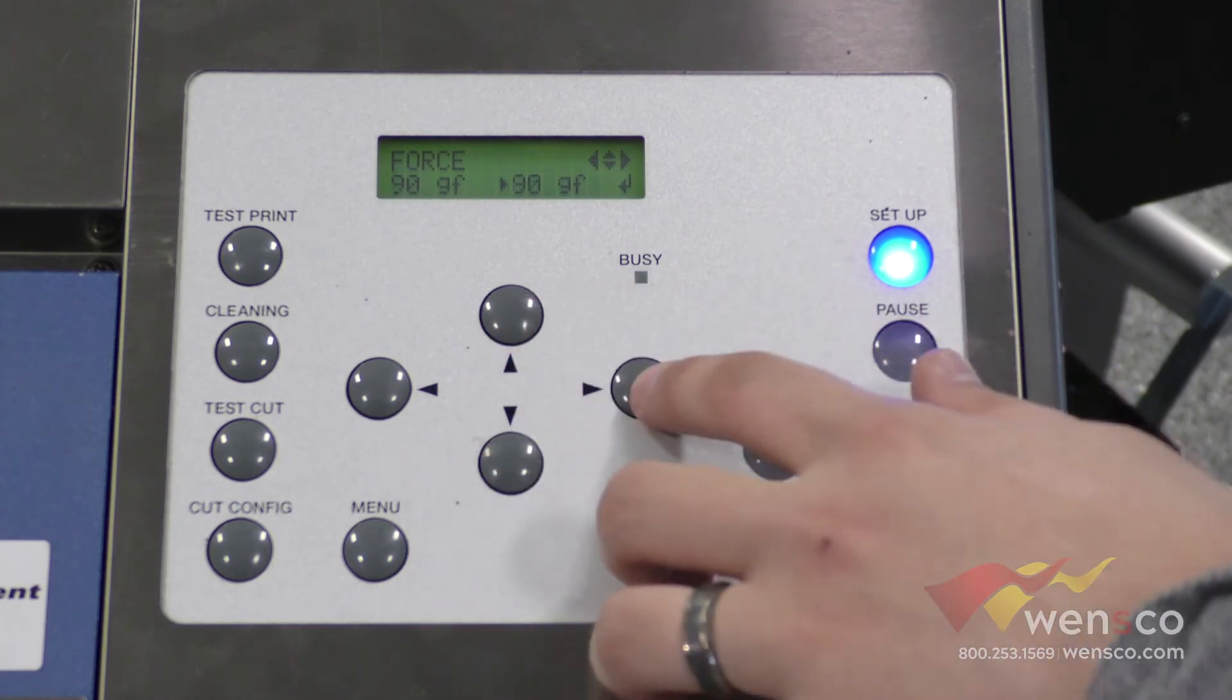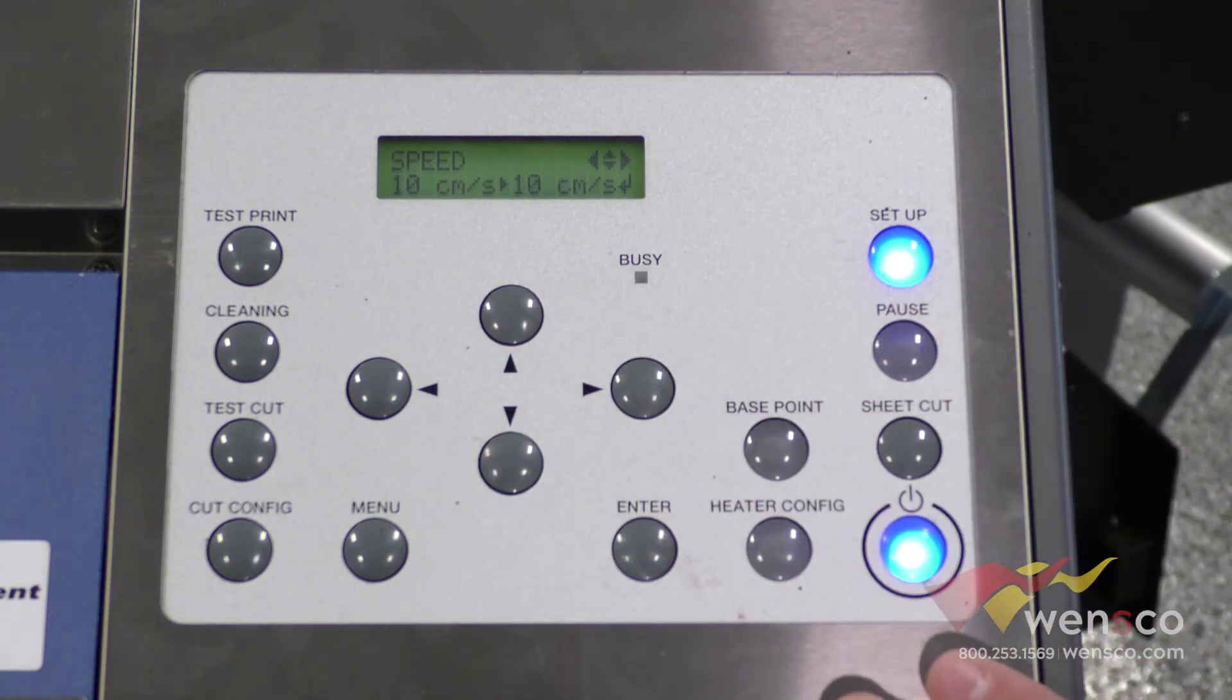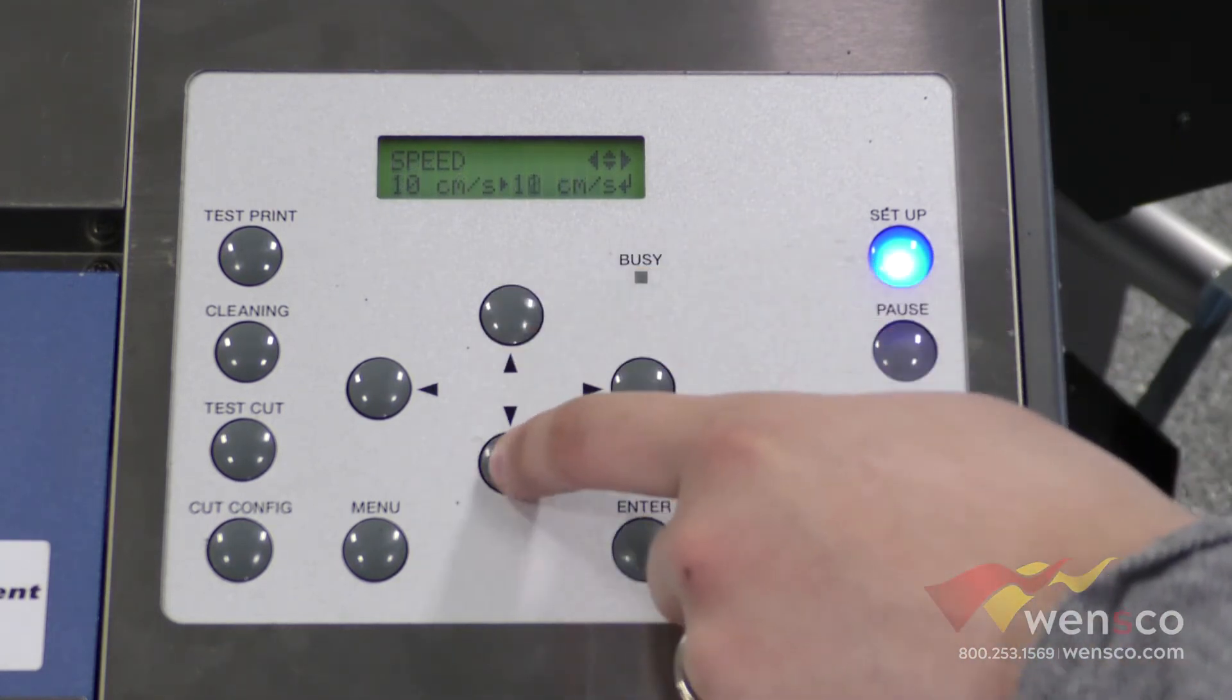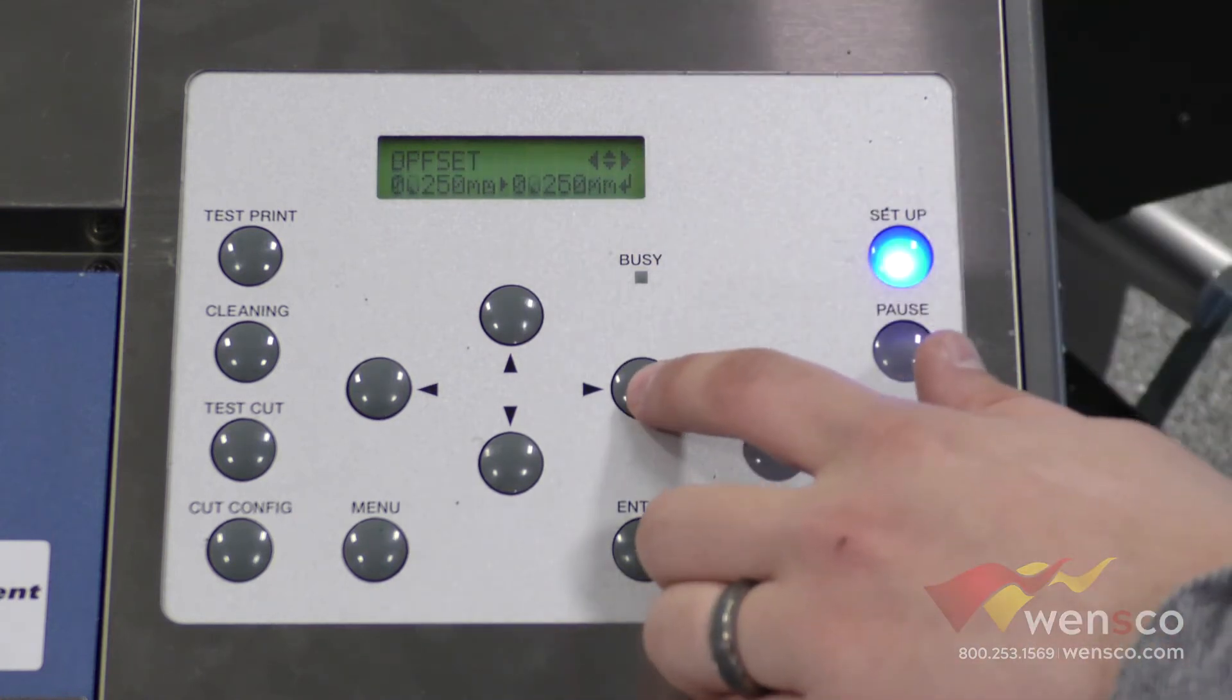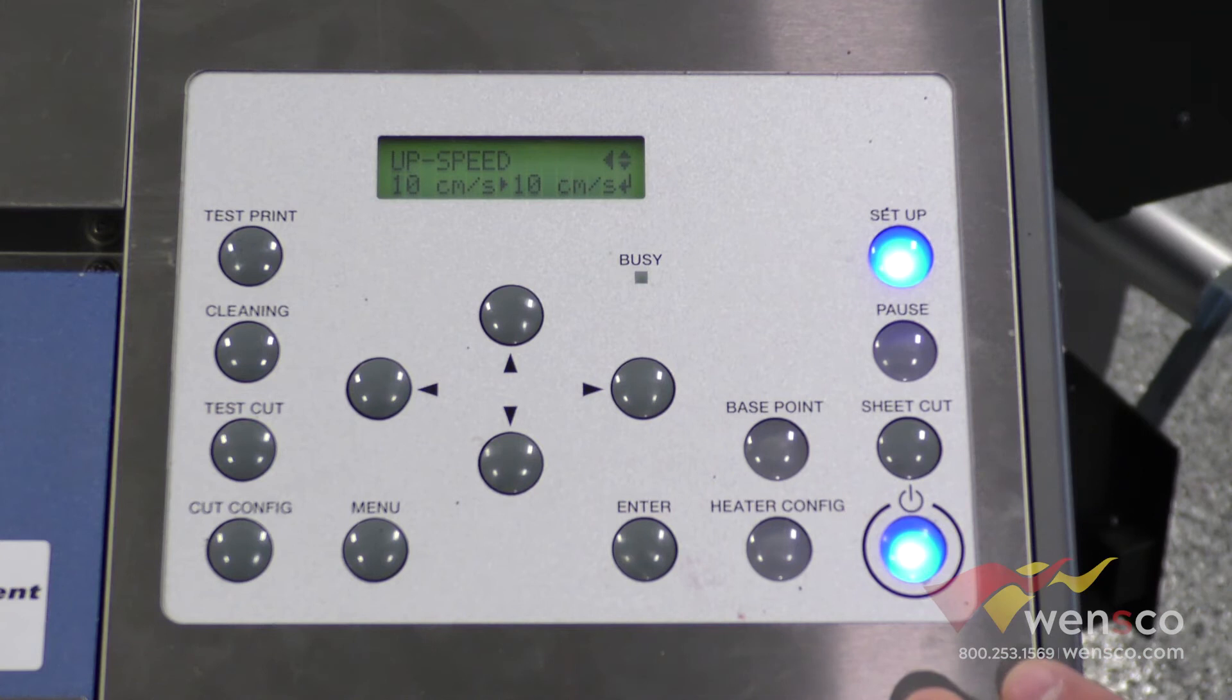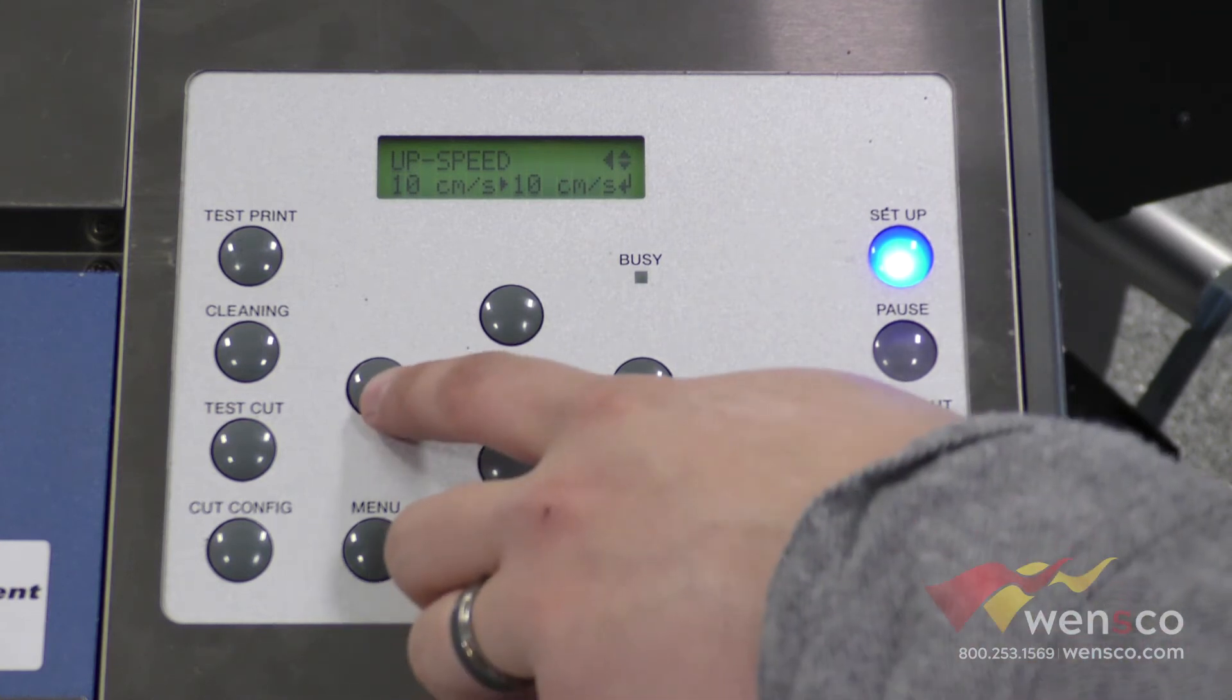If you want to change how fast it cuts, you can press the right arrow and go to speed. From here we can go up and down. It's important to remember that if you change the speed, you'll also need to change the up speed so that they match. Otherwise you're going to get issues on your corners of all of your cuts.